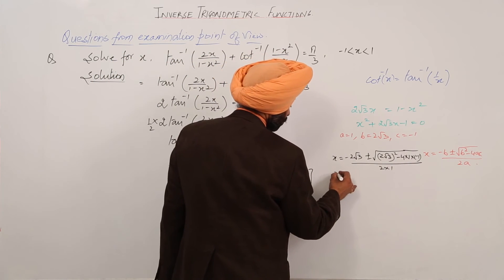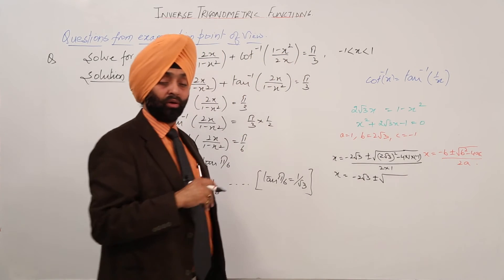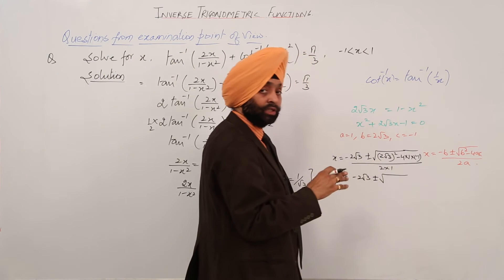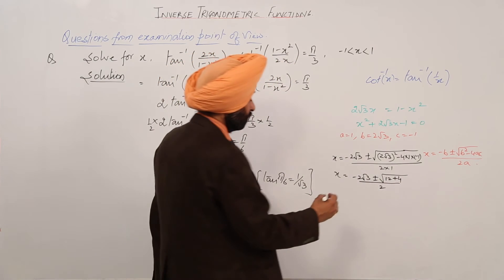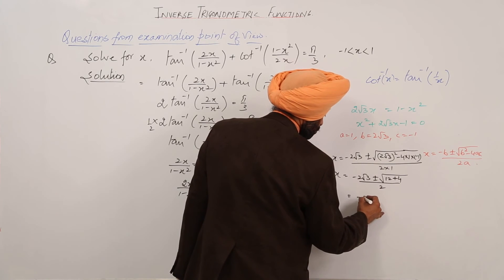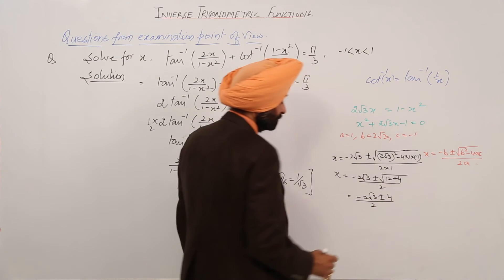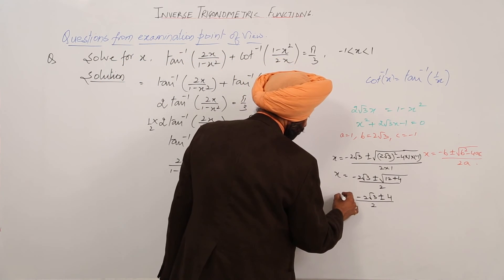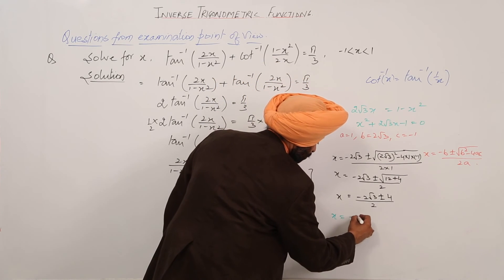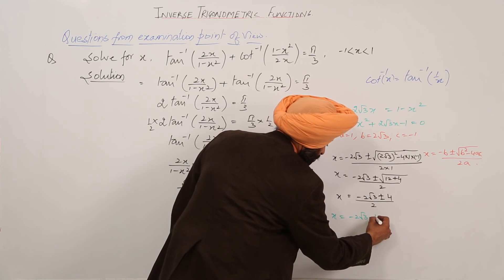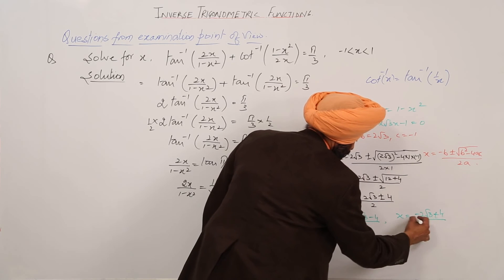So we are having x equal to minus 2 root 3 plus minus under root of (12 plus 4), which is 16, upon 2. That gives x equal to minus 2 root 3 plus minus 4 upon 2. So we are having two values: x equals (minus 2 root 3 minus 4) upon 2, and x equals (minus 2 root 3 plus 4) upon 2.